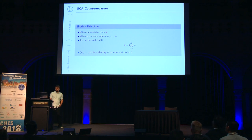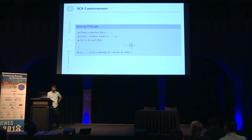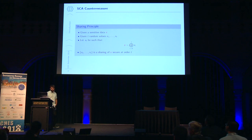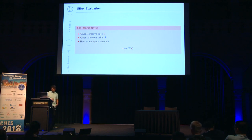The most efficient countermeasure against side-channel attacks is the sharing principle. To secure sensitive data X, you randomly draw T values X1 to XT and build an extra value X0 by combining all the previous values with a given law, which is here the XOR. As long as you access the shares X0 to XT one at a time, you can securely compute with the value X. Our problem is: given sensitive data X and a known mapping S represented with a table, to securely compute S(X), looking at performance when you have L such evaluations.